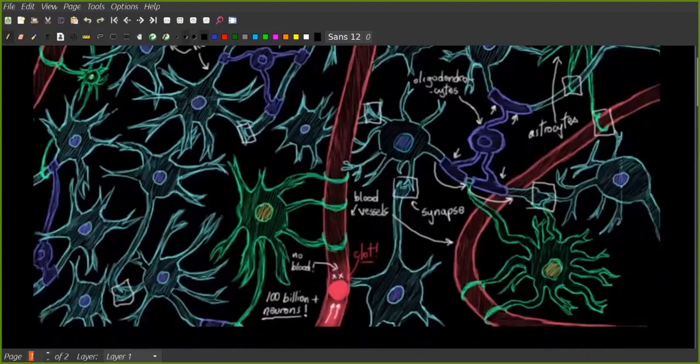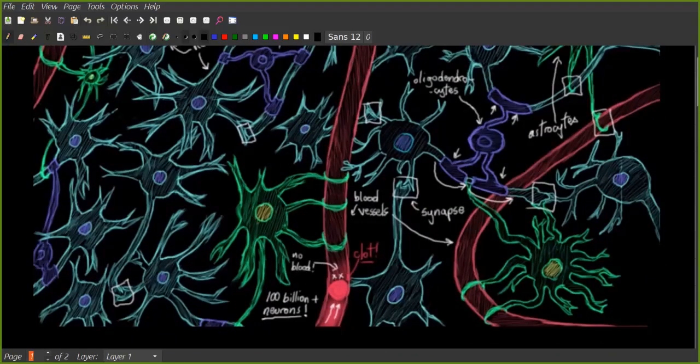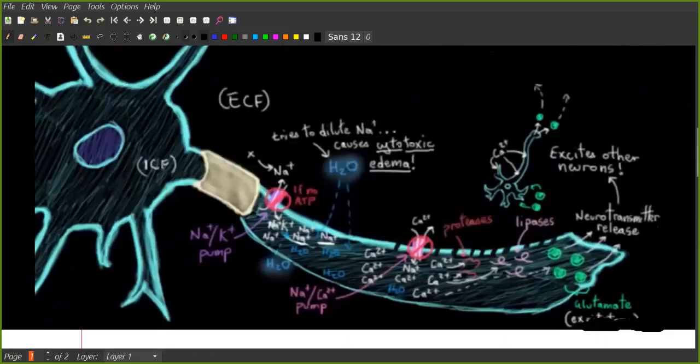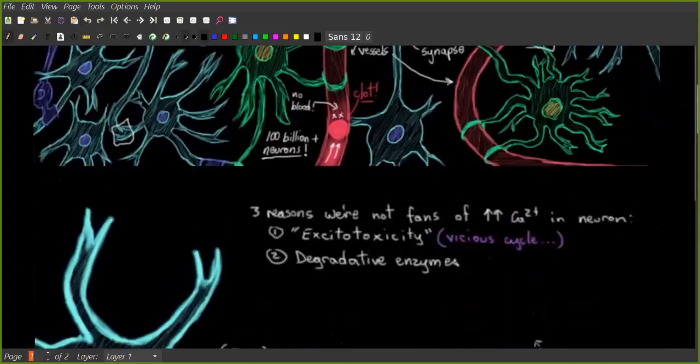So what happens is if we have a clot down here - actually this is a drawing and there's 100 billion plus neurons there - when we have a clot there's no oxygen, so the blood doesn't get to the neurons.